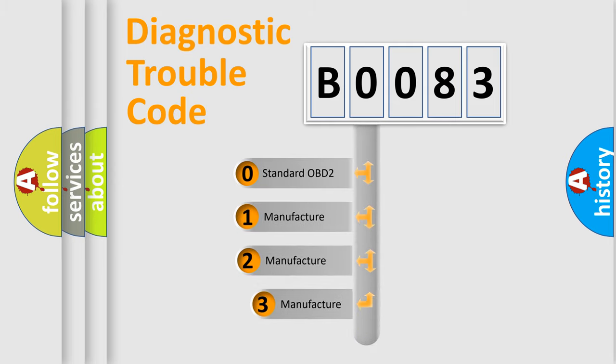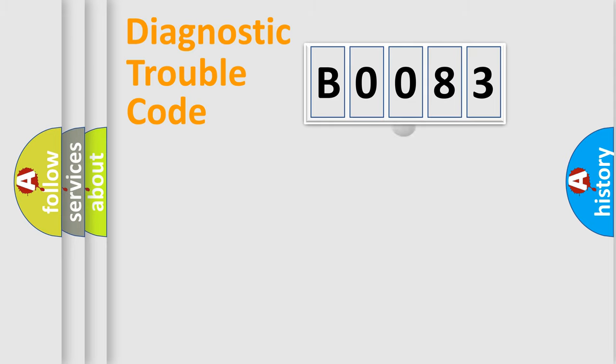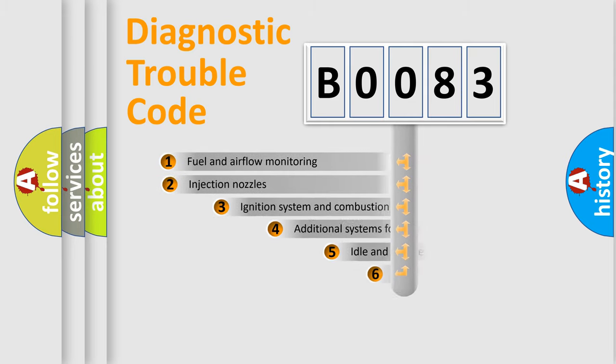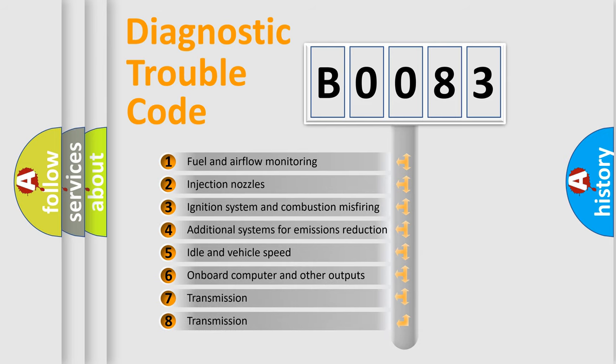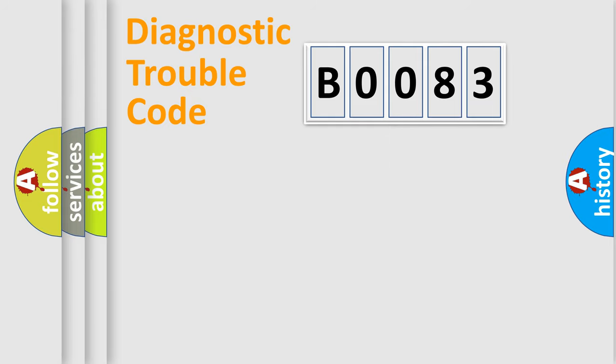If the second character is expressed as zero, it is a standardized error. In the case of numbers one, two, three, it is a more precise expression of the car specific error. The third character specifies a subset of errors. The distribution shown is valid only for the standardized DTC code.